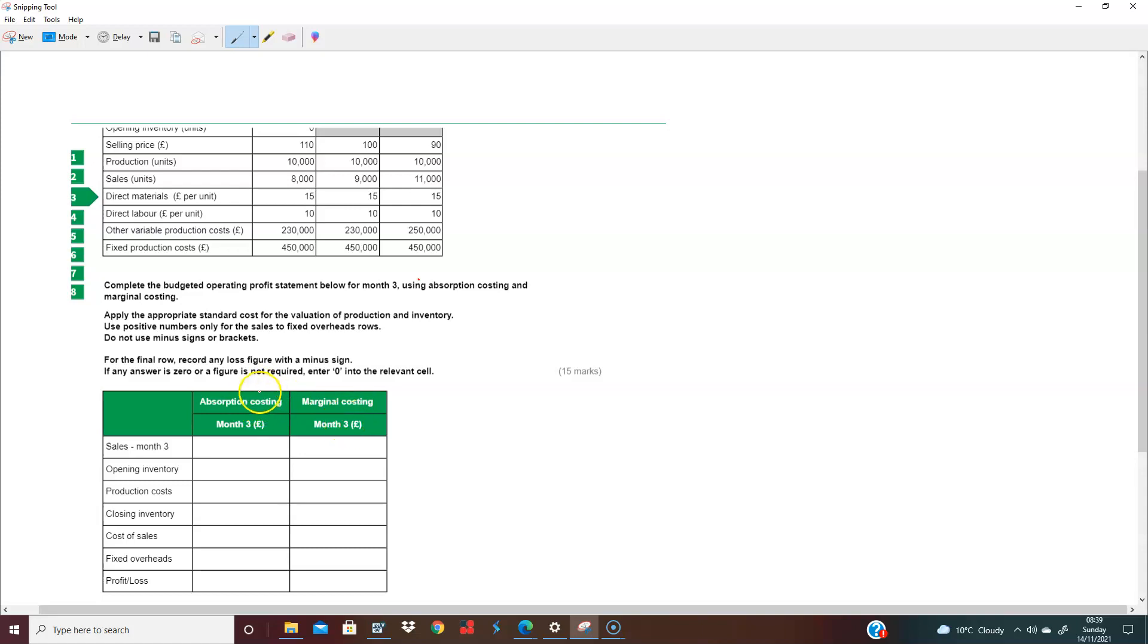Now, the thing about absorption costing is we're absorbing all the costs. That's what's important. But with marginal costing, we are not including in our absorption process these fixed production costs. We're not saying we don't deduct them. We just deduct them as they are, as period costs. So these are considered as period costs. We don't have period costs with absorption costing. We put all the costs into the product. We don't put all the costs into the product with marginal costing. So that's the first point.